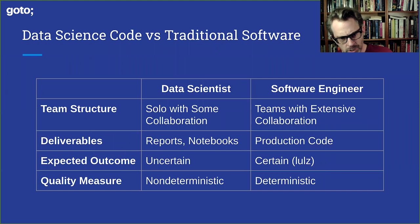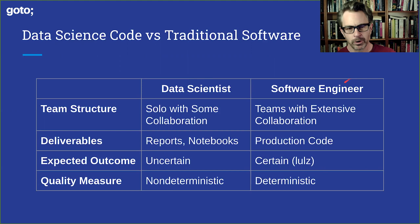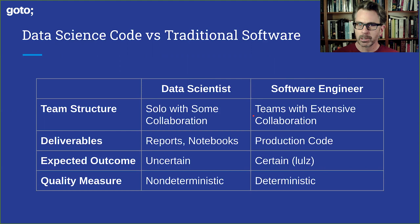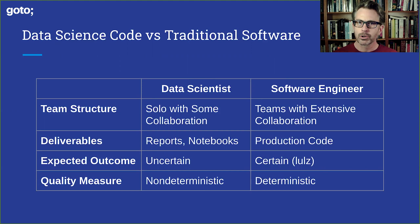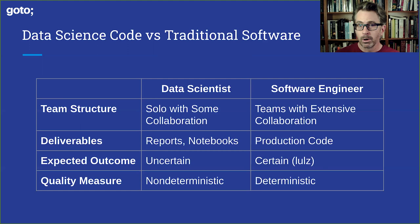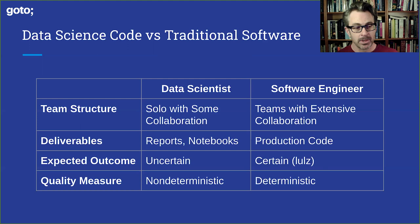This is a fairly complex graphic. I want to highlight the general differences between data science and software engineering — these are preponderances, not hard fast rules. Data scientists tend to work by themselves with limited collaboration. They are typically focused on generating reports or notebooks, so they don't typically put their code into production. The expected outcome of their work is entirely uncertain — data scientists are engaged in research and development. They don't know what they're going to get at the end of their work. The quality measurement is often non-deterministic: you don't necessarily know what is good, what is passing and what is failing.